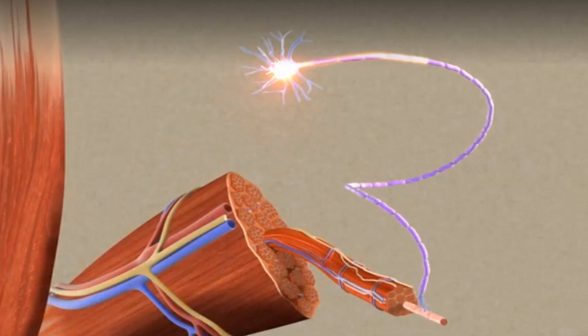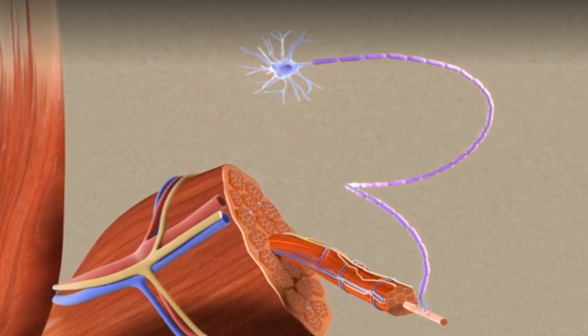Two sets of muscles, called the corrugators and procerus muscles, lie beneath the skin between your eyebrows. These muscles allow you to squint and to furrow your brow when you frown.